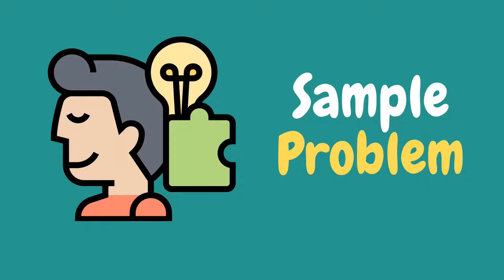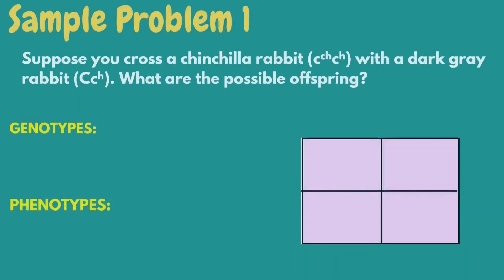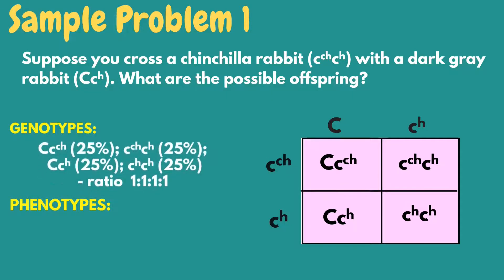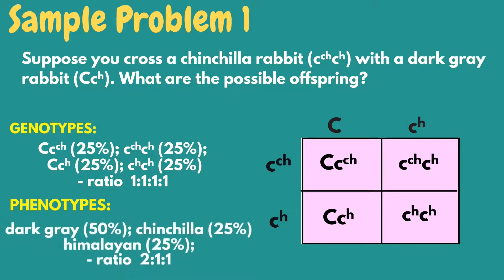To show the possible crossing of each genotype in rabbit fur color, let's answer sample problems using the Punnett Square. In this problem, the genotype combination for each fur color was already given. Suppose you cross a chinchilla rabbit with a dark gray rabbit — what are the possible offspring? The possible offspring based on the Punnett Square are dark gray, chinchilla, another dark gray, and himalayan. There are four different genotypes, so the genotypic ratio is 1:1:1:1. When we express these genotypes into their phenotypic form, there are two dark gray, one chinchilla, and one himalayan, giving a phenotypic ratio of 2:1:1.